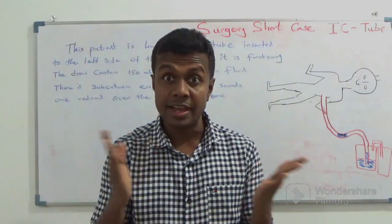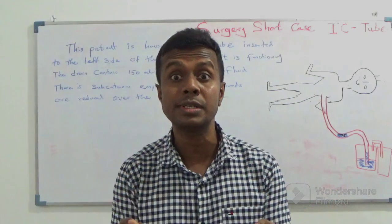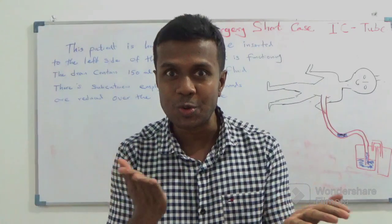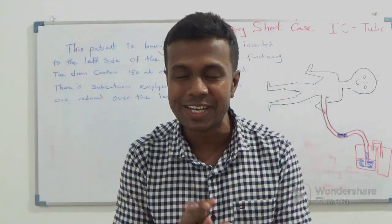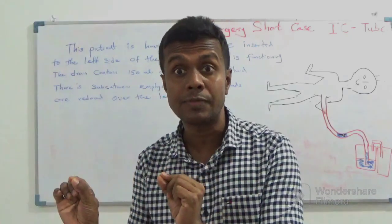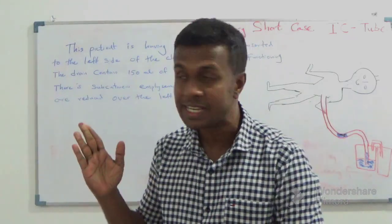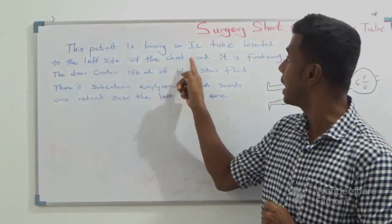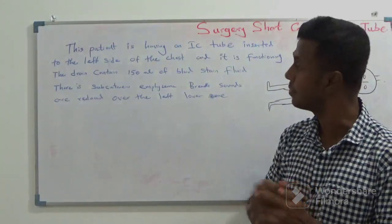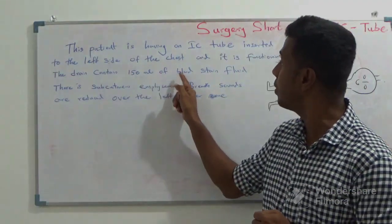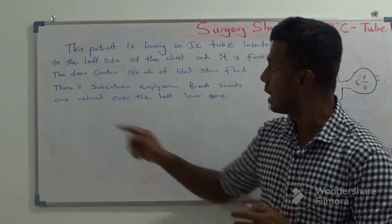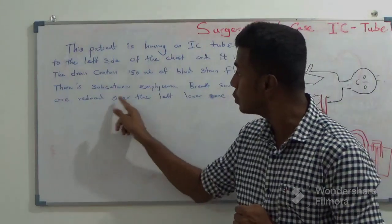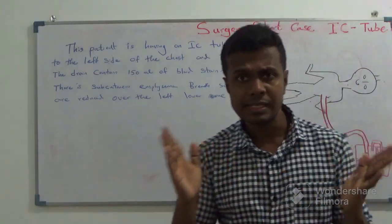At the end of your examination, you have to present your findings to the examiner in order to get through your surgery short case exam. For example: 'This patient has an IC tube inserted to the left side of the chest and it is functioning. The drain contains 150 ml of blood-stained fluid. There is subcutaneous emphysema. Breath sounds are reduced over the left lower zone.' That is how you present.